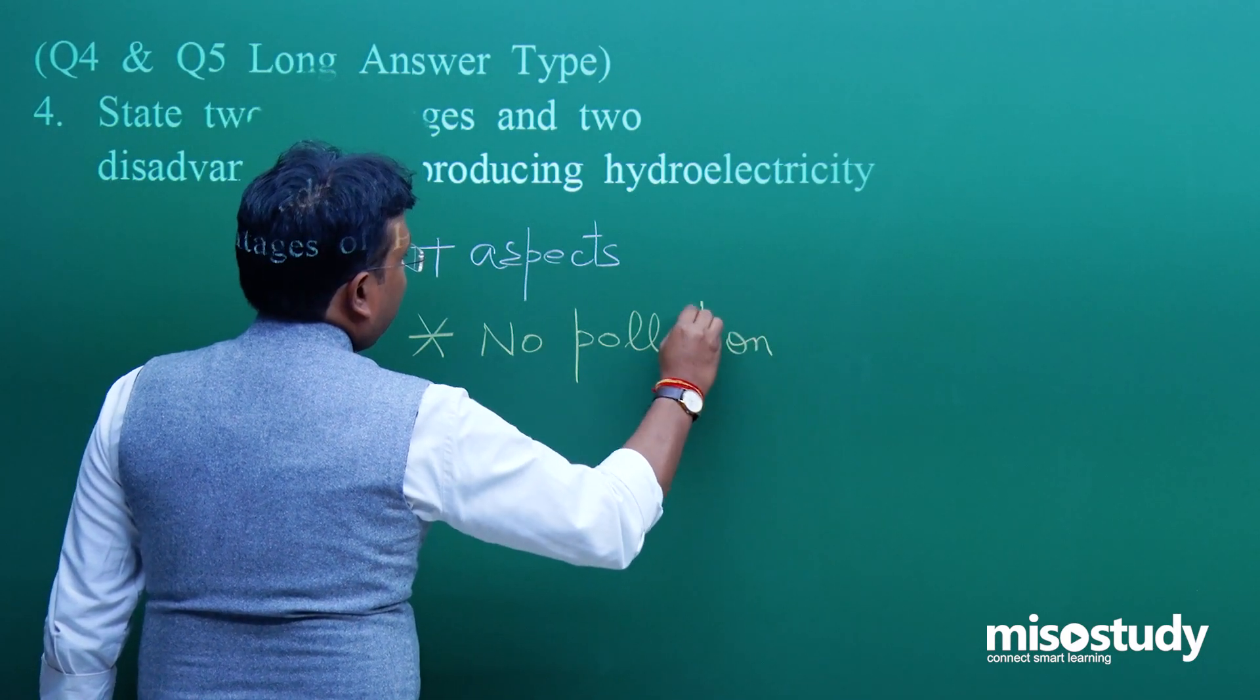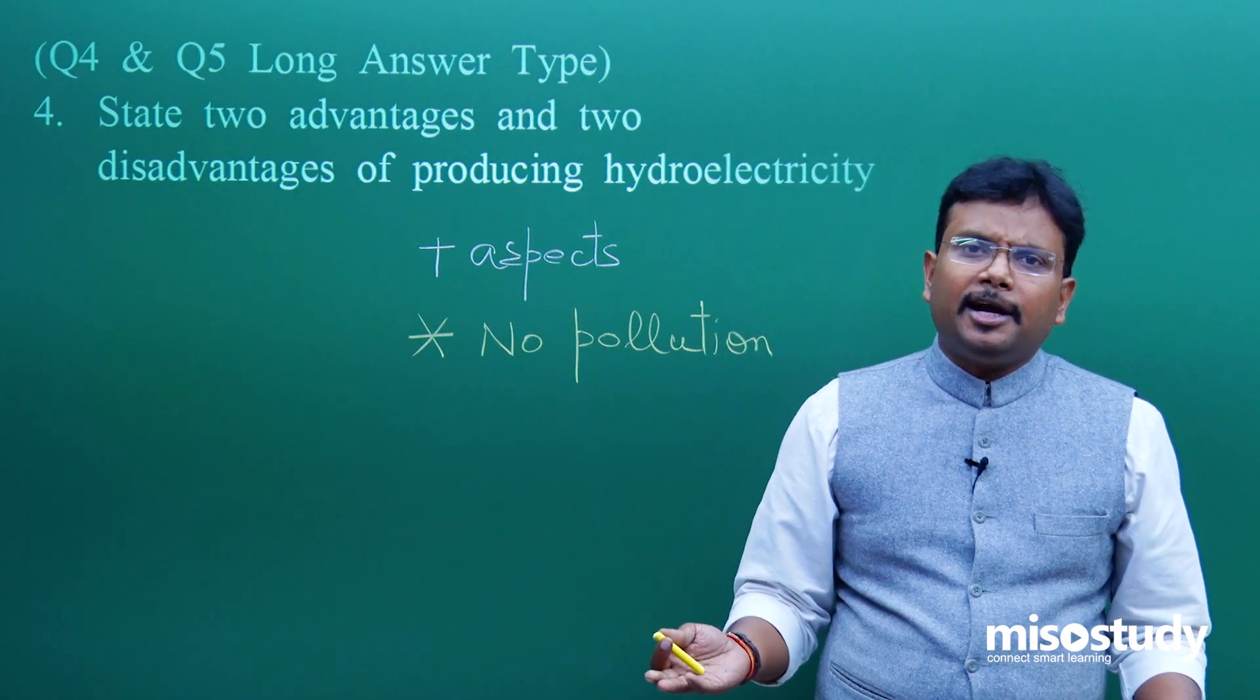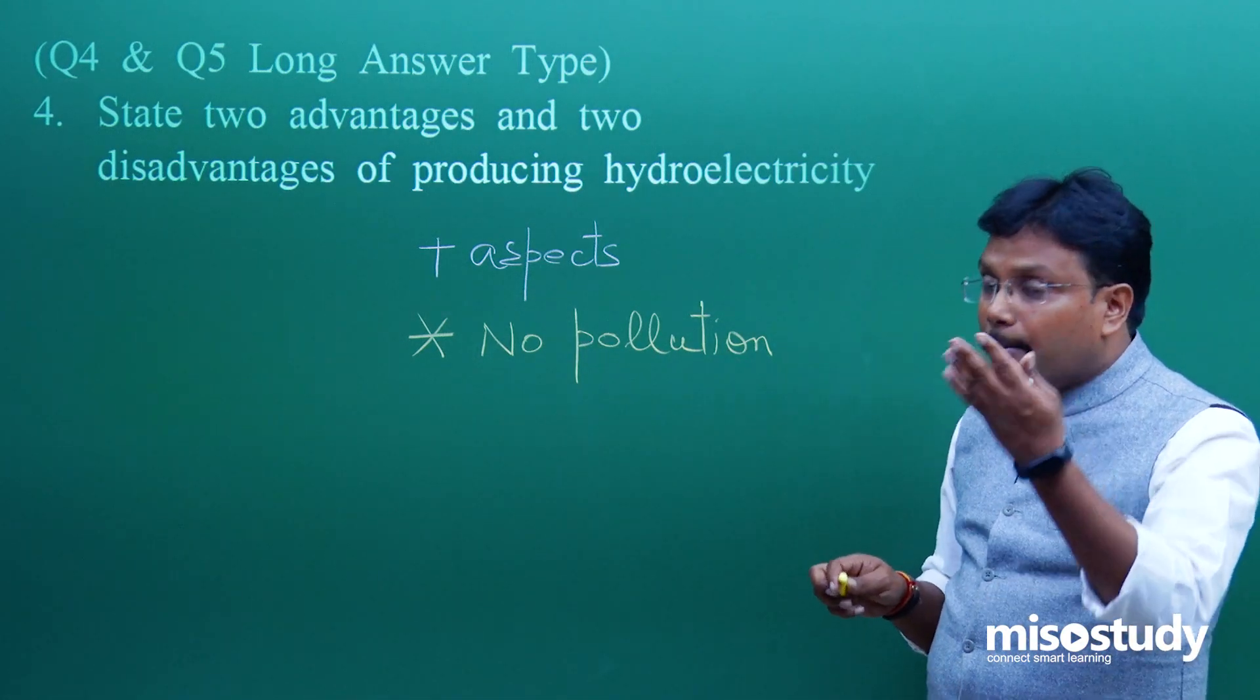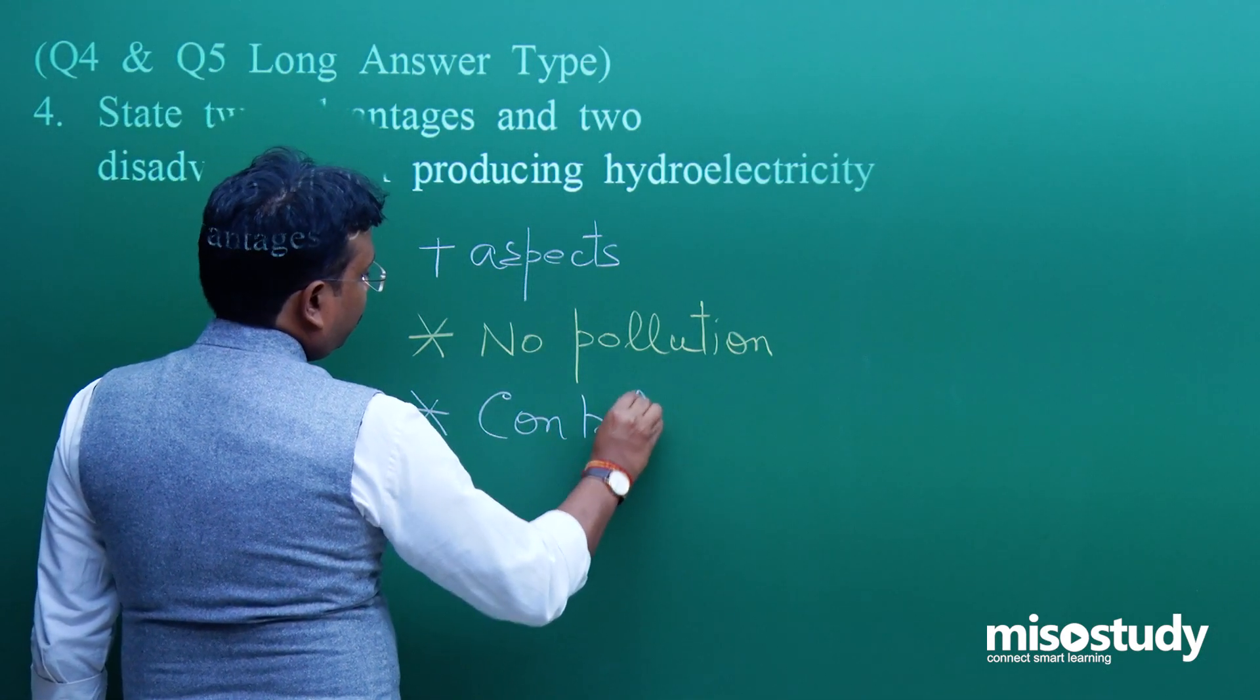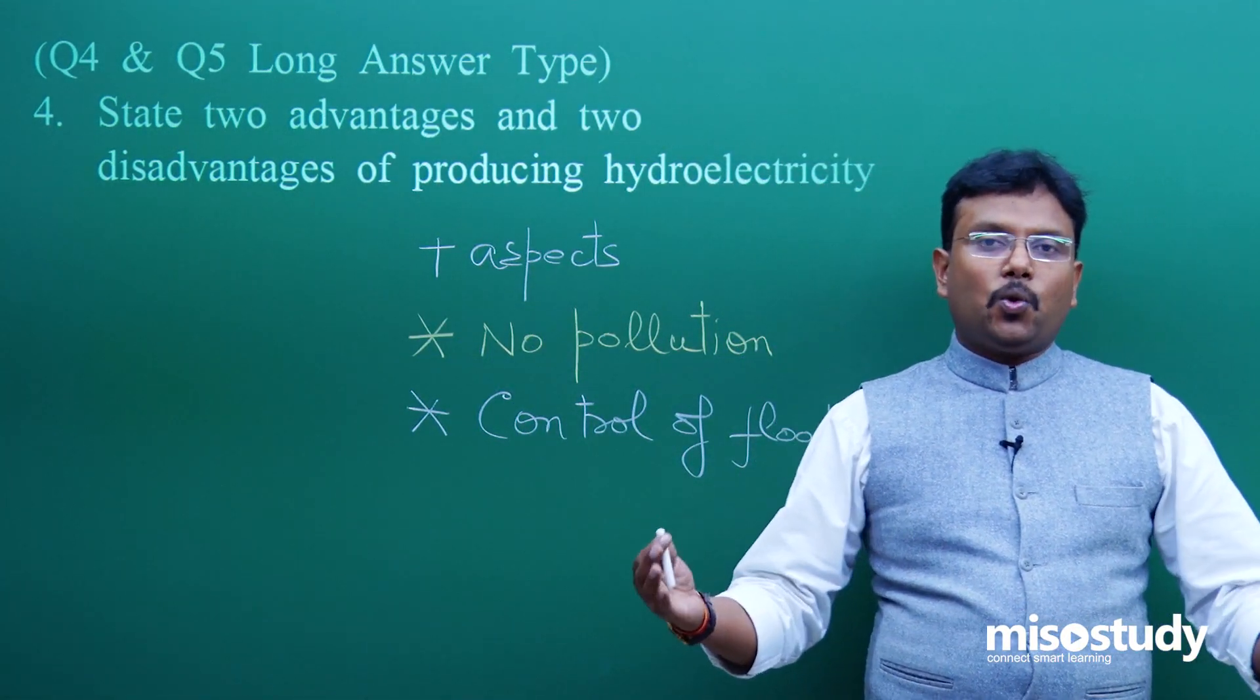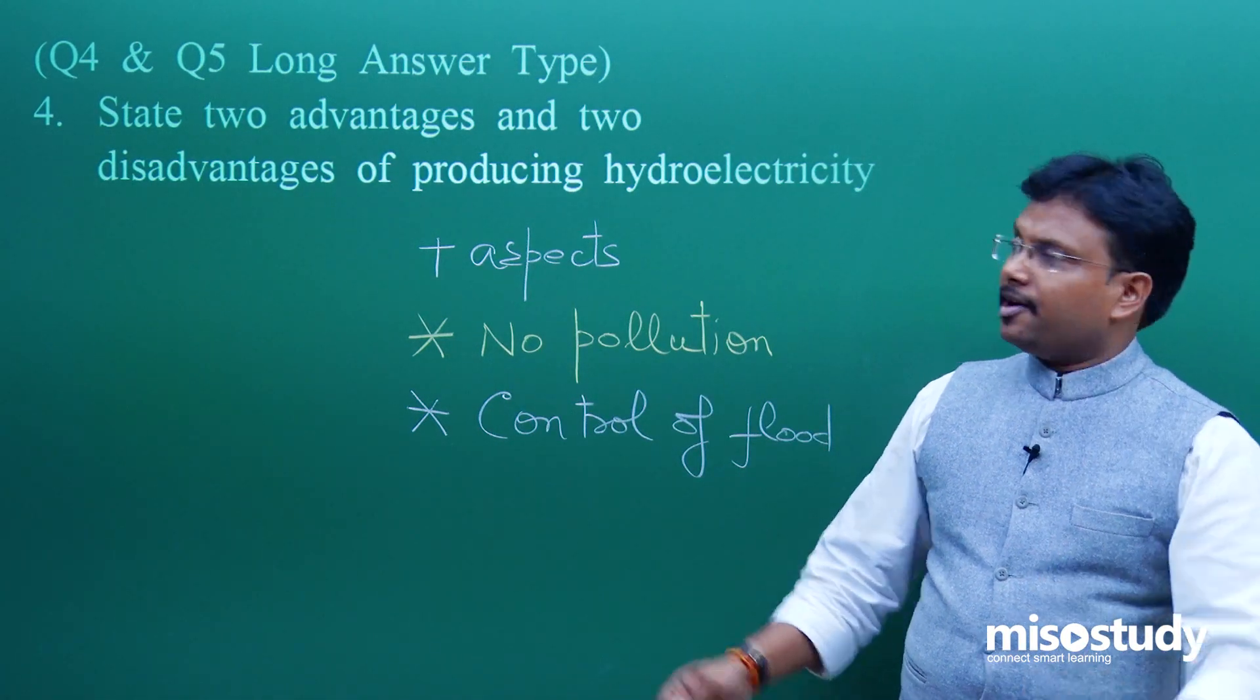First is no pollution. See for example, in Bhakra Nangal Dam, what exactly is happening? The river Sutlej's water is directly coming on to the turbines and electricity generated. As such no fumes, no coal burning, nothing like that. So best option, best example is no pollution. Number 2, control of flood. Because if lot of rain is happening, then you can store large amount of water in your catchment area. That way you can reduce the possibility of flood. Like that there are other positive aspects or advantages.